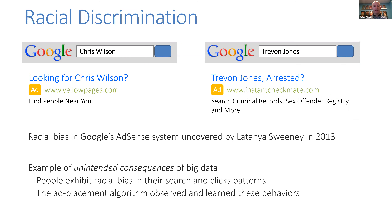Latanya Sweeney systematically studied this and showed that it was happening for all kinds of different African-American sounding names. This is a really interesting example of an unintended consequence of big data and machine learning. This is not happening because there was a racist engineer at Google who coded the algorithm to do this. Instead, Google's targeting ads based on data — they look at what ads people have clicked on in the past, and people have these kinds of biases. So in the data, it looked like when people search for certain kinds of names, they tend to click on background check ads. The algorithm starts reflecting that — in the future, when it sees names like that again, it sends these ads and creates this kind of racial bias.